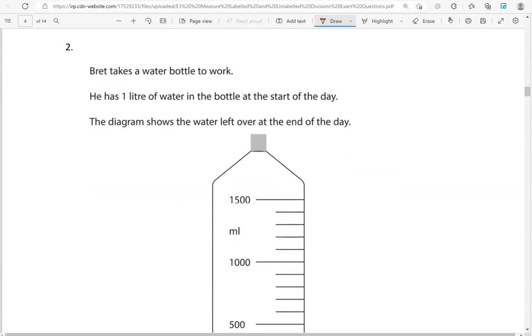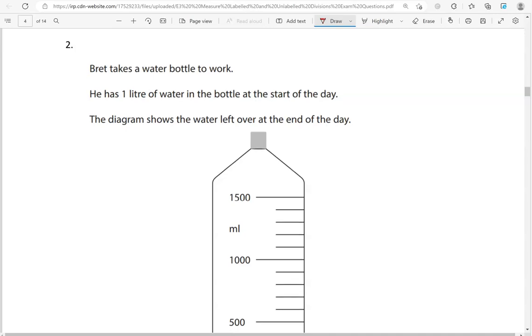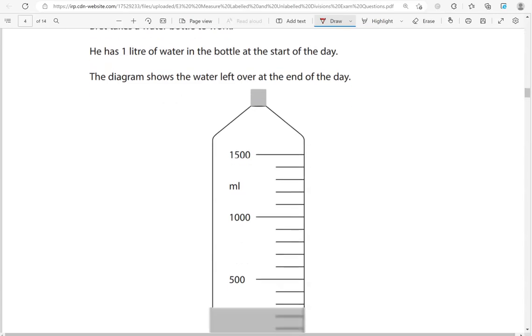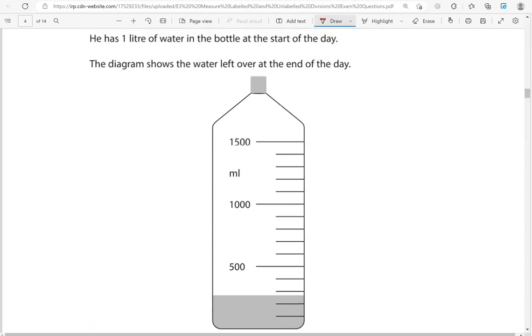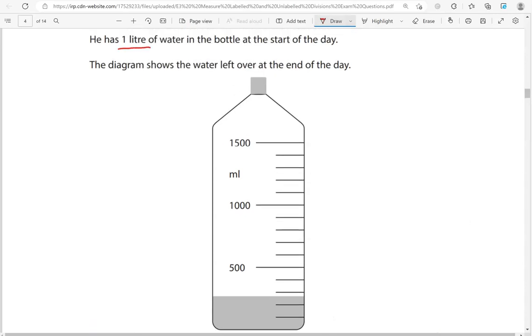Brett takes a water bottle to work. He has 1 liter of water in the bottle at the start of the day. The diagram shows the water left over at the end of the day. How much water did Brett use to the nearest division? There was 1 liter at the start of the day, and that is this point here.